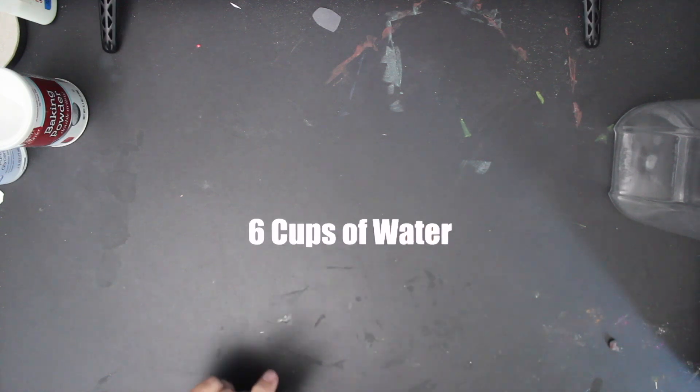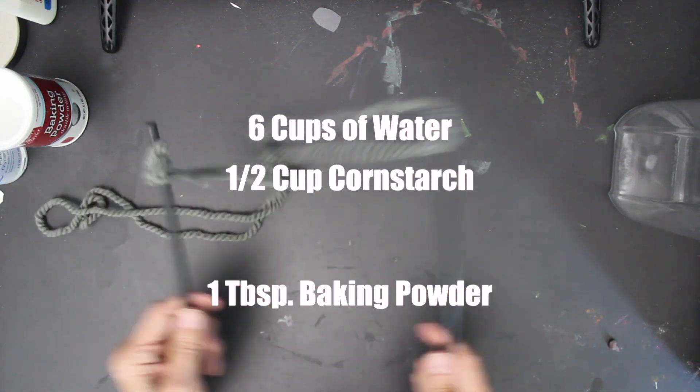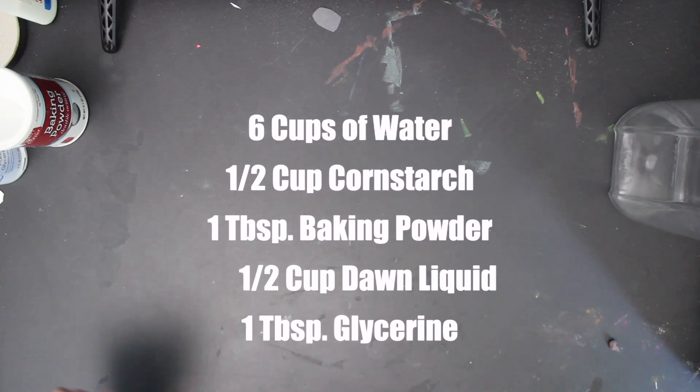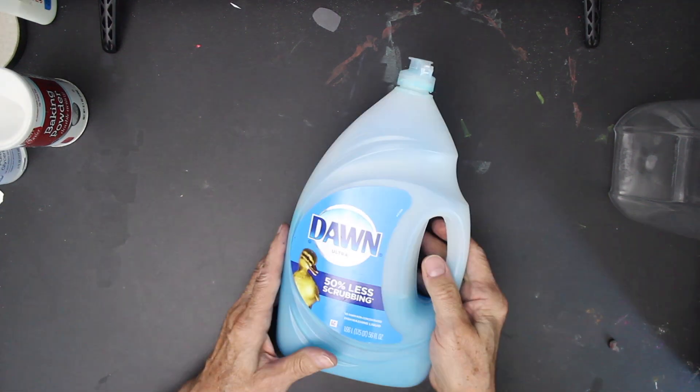Welcome back to the Art Room for our Monster Bubbles episode. We're going to be needing six cups of water, one half cup cornstarch, one tablespoon of baking powder, half a cup of Dawn liquid, and one tablespoon of glycerin. The glycerin you might be able to find at CVS. That's where I got mine. That's a little tip for you, where to buy that.